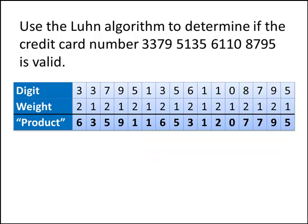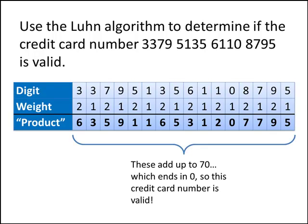And then all we have to do is add the results all together. They all add up to seventy, and since seventy ends in zero, that means our credit card number is valid.